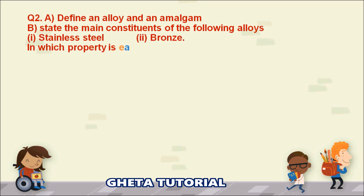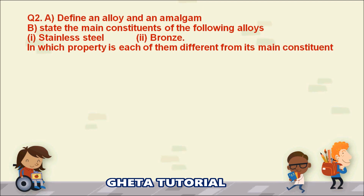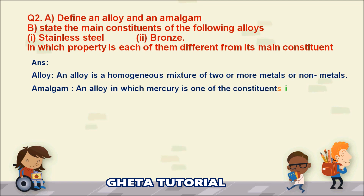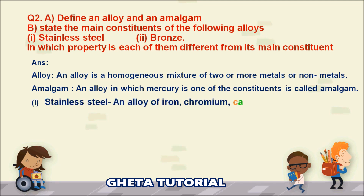The second question: define an alloy and an amalgam. An alloy is a homogeneous mixture of two or more metals or non-metals. An amalgam is an alloy in which mercury is one of the constituents.